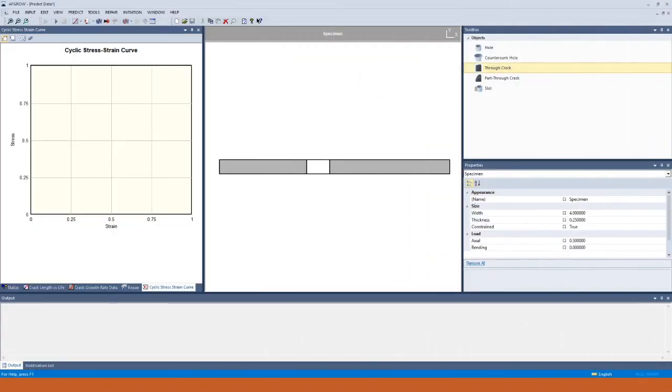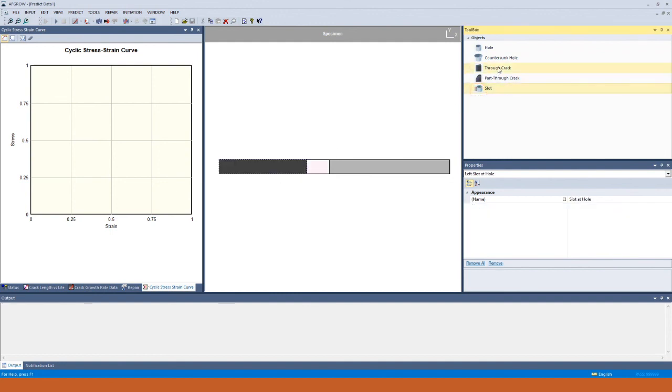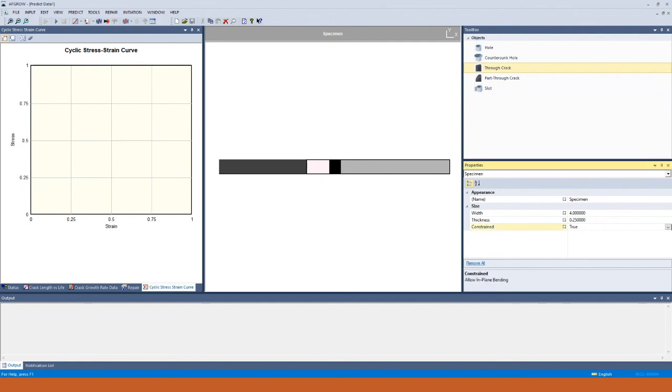To turn on and off the constraint for in-plane bending, add a slot to a hole and a crack. Select the specimen and in the properties window you can choose from true or false.